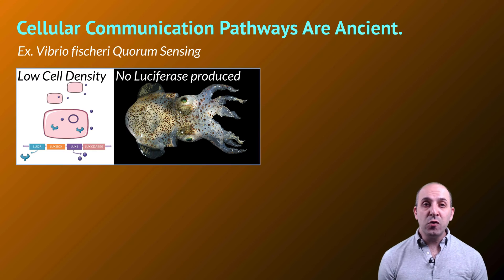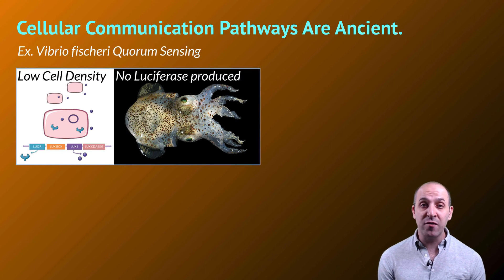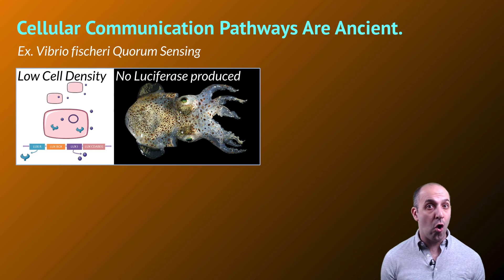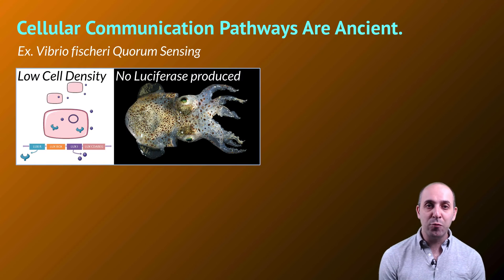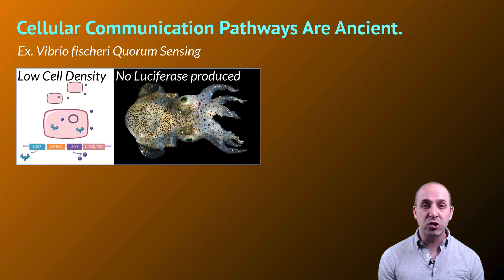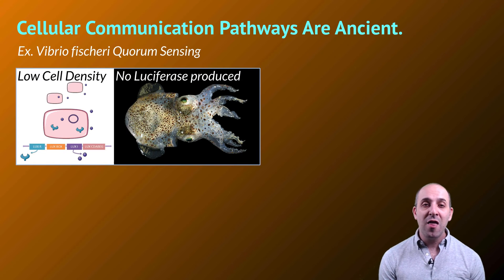Before we get into multicellular organisms, it's important to understand that cellular communication pathways are ancient, and we see them in all lineages of life. The example I've chosen to show this is quorum sensing in Vibrio fischeri, which are a group of bacteria that engage in cell signaling among themselves.